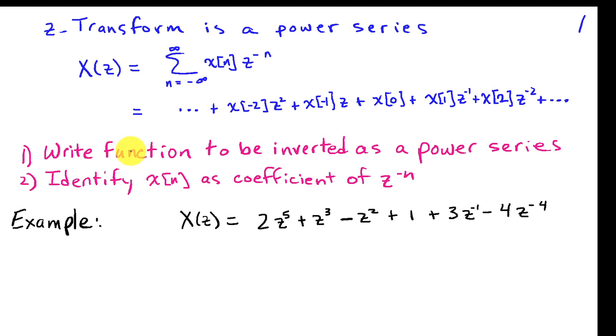Our approach is to first write our function to be inverted as a power series. And then we can pick off the coefficients X of N from what's in front of Z raised to the minus N.